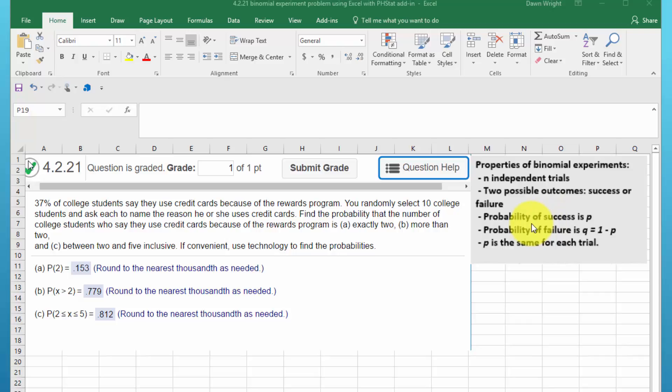The probability of success is p, which is the proportion 0.37. The probability of failure we know is q, which is 1 minus p. And p, the probability, is the same for each trial. We're always going to know that 37 percent of the students say they use credit cards because of the rewards program.